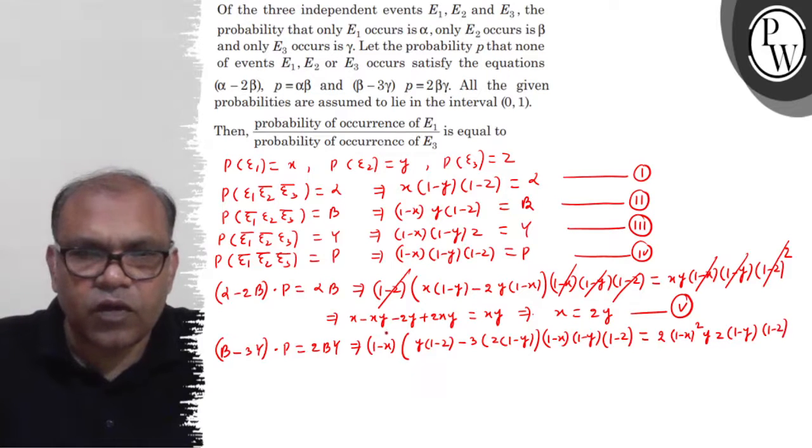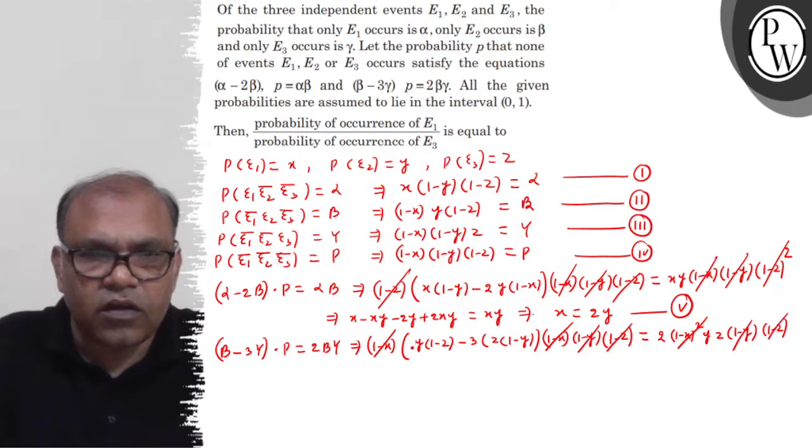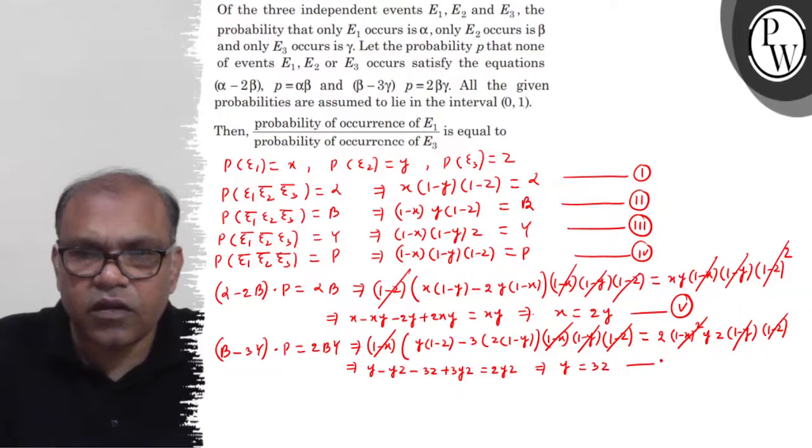It will be (1 minus X) square into Y into Z into (1 minus Y) into (1 minus Z). And then (1 minus X) square cancel. This is (1 minus Y) cancel, (1 minus Z) cancel. So you have to get the result. The result mela Y minus YZ minus 3Z plus 3YZ equals 2YZ. Solve kiya to aapko mil gaya this implies Y equals 3Z. Isko lijiye 6th.